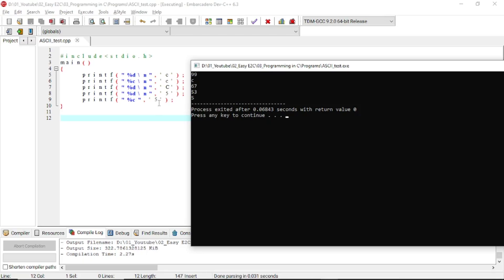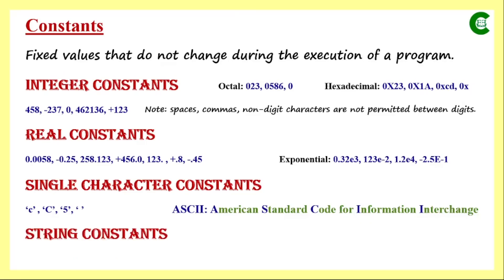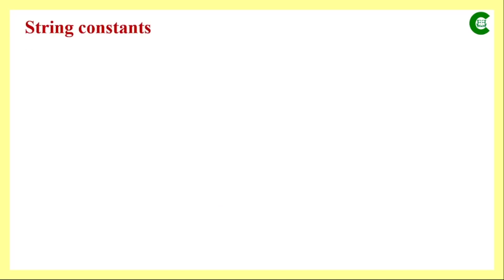Another type of constant is string constant. A string is an array of characters — it stores multiple characters together as a sequence. String data is written within double quotes, and letters, digits, special characters, and spaces are all allowed as part of string constants.